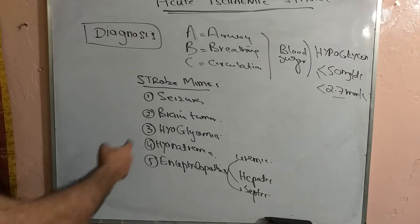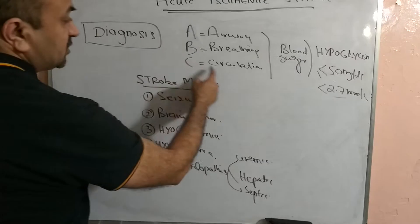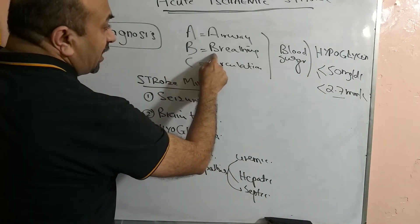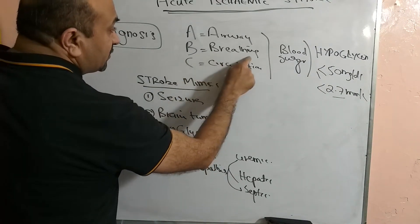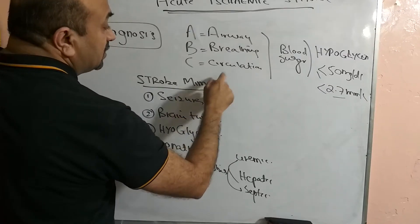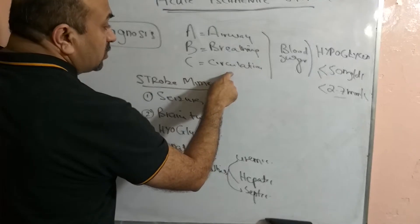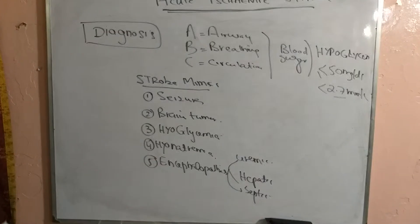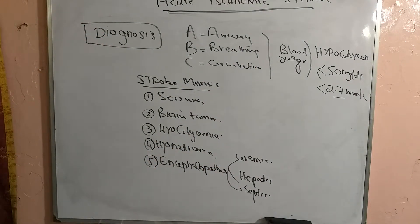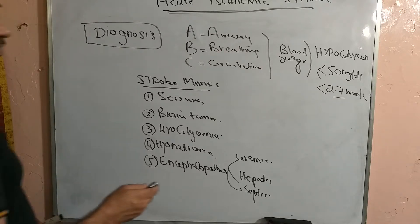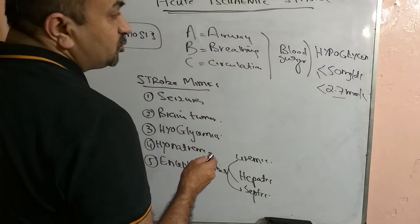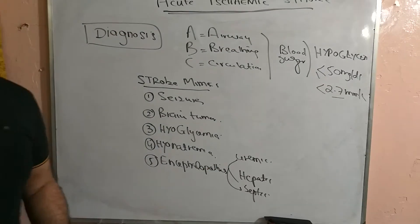We also check blood pressure. If it is on the lower side and we have auscultated the chest, we make a decision whether to give fluids or put the patient on inotropic support — for example, in cases of pulmonary edema or crepitations in the chest.